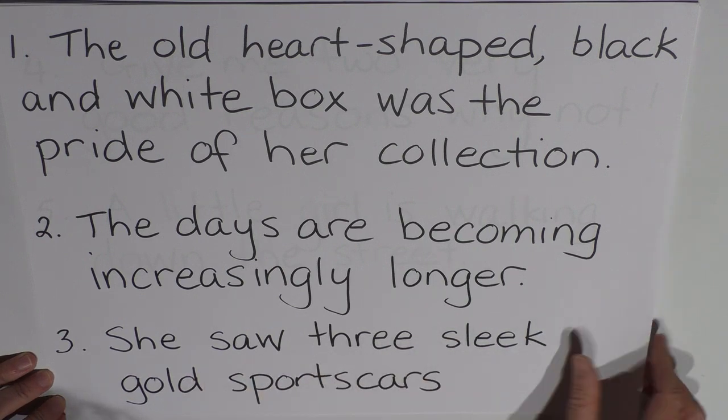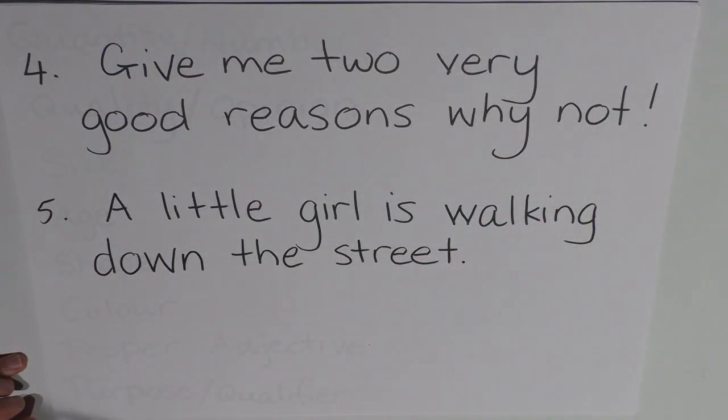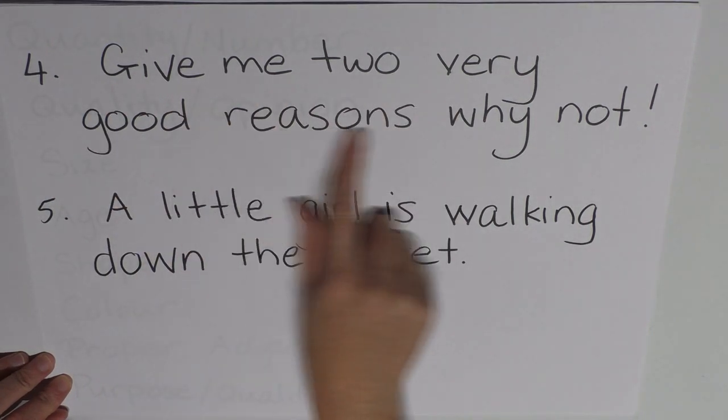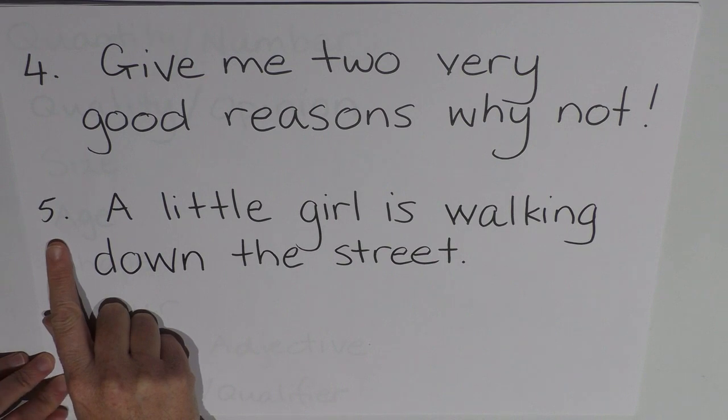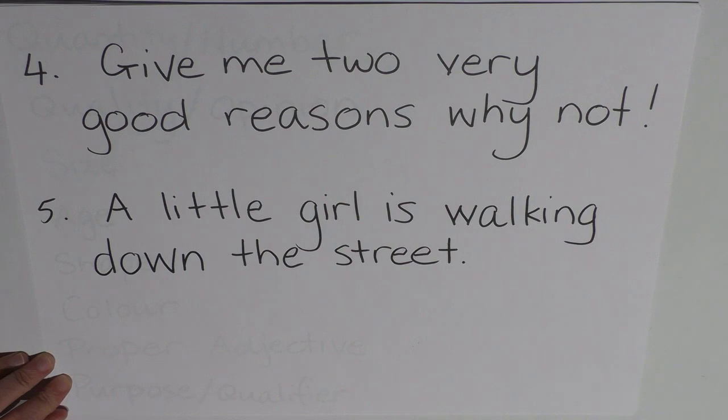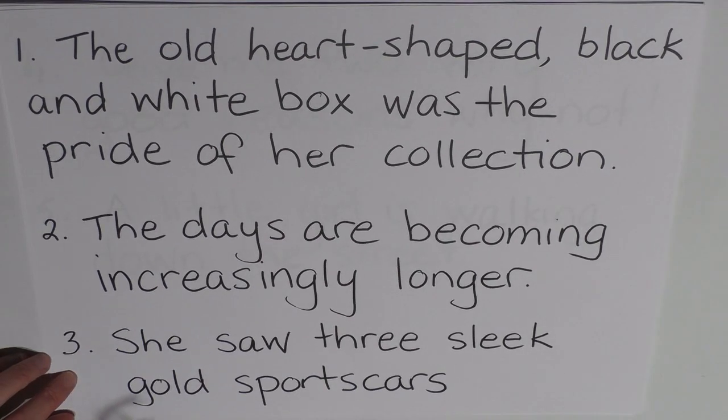Now these are sentences and we'll look at the adjective phrases and once I've read all the sentences we'll go back and have a look. Number four, give me two very good reasons why not. And finally number five, a little girl is walking down the street. So let's go back now and have a look at where the adjective phrases are and just a little bit about them.